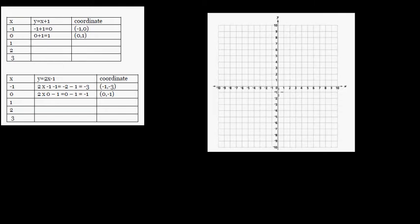So where is negative one, zero? This point here is negative one comma zero. When you put zero into this equation, zero plus one is one — so when X is zero, Y is one. This coordinate is zero comma one. When you put one into this equation, one plus one equals two, so when X is one, Y is two.